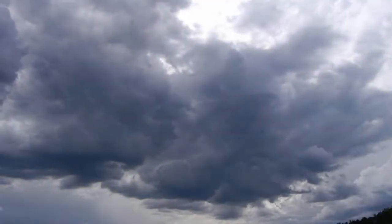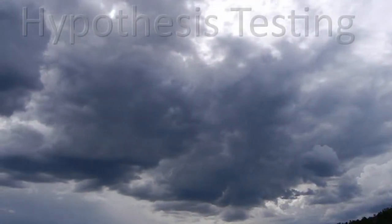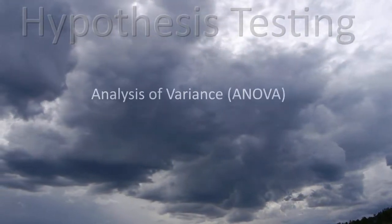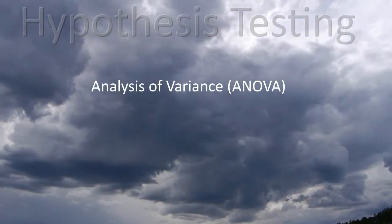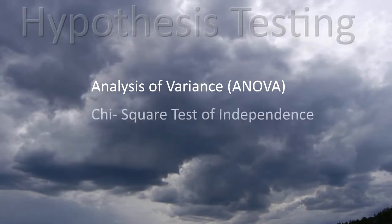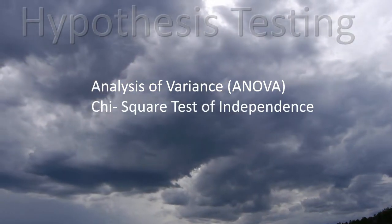Hypothesis testing is used when we need to make decisions concerning populations on the basis of only sample information. A variety of statistical tests are used to help arrive at these decisions — for example, the analysis of variance tests (ANOVA) and the chi-square test of independence, to name a couple. But they all include the same basic steps.